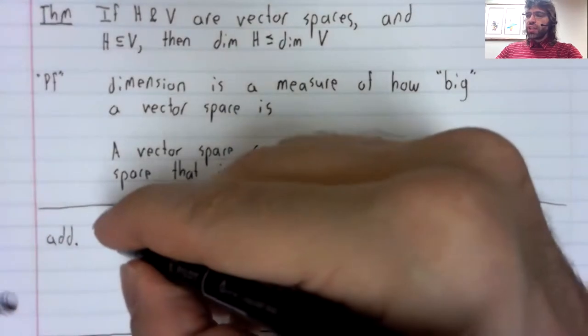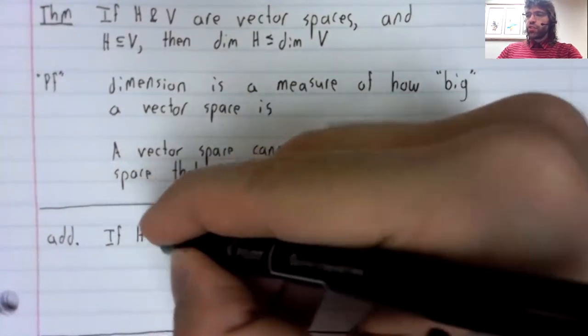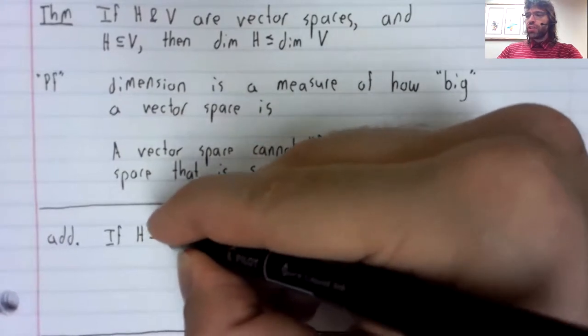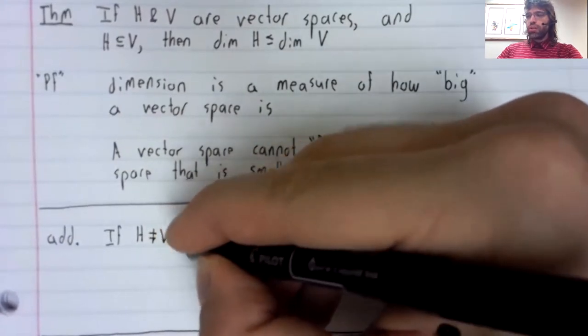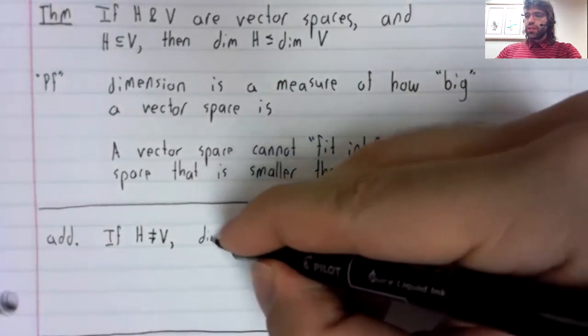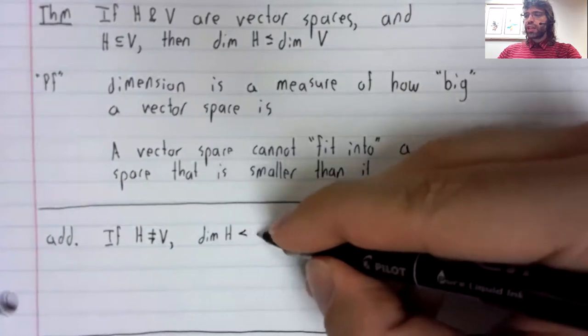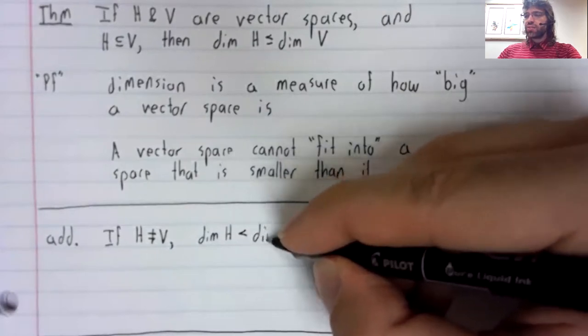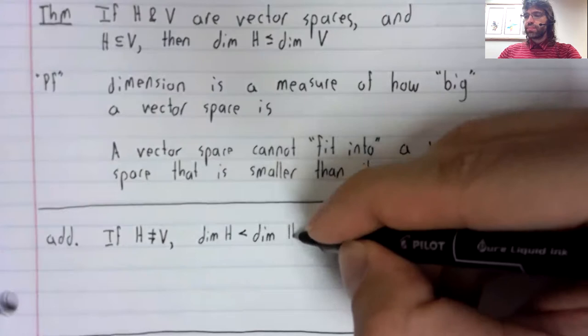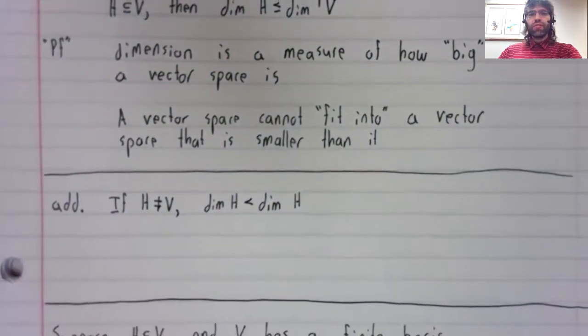I'll now state that if H is not equal to V, the dimension of H is strictly less than the dimension of V.